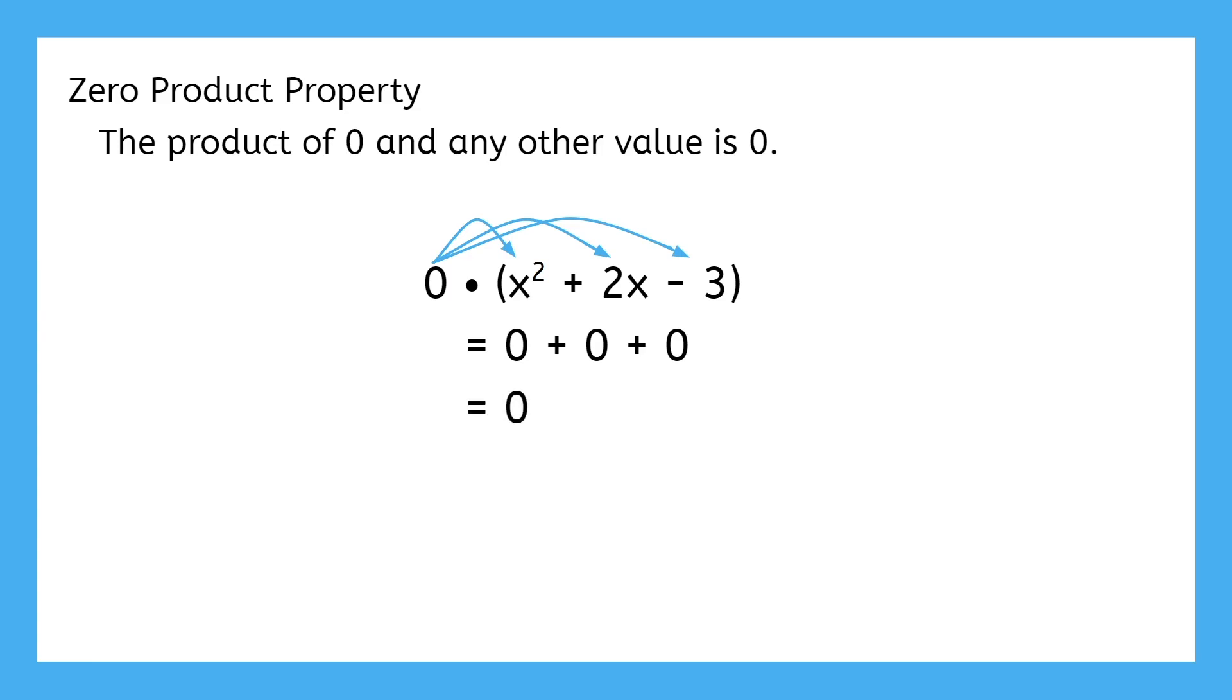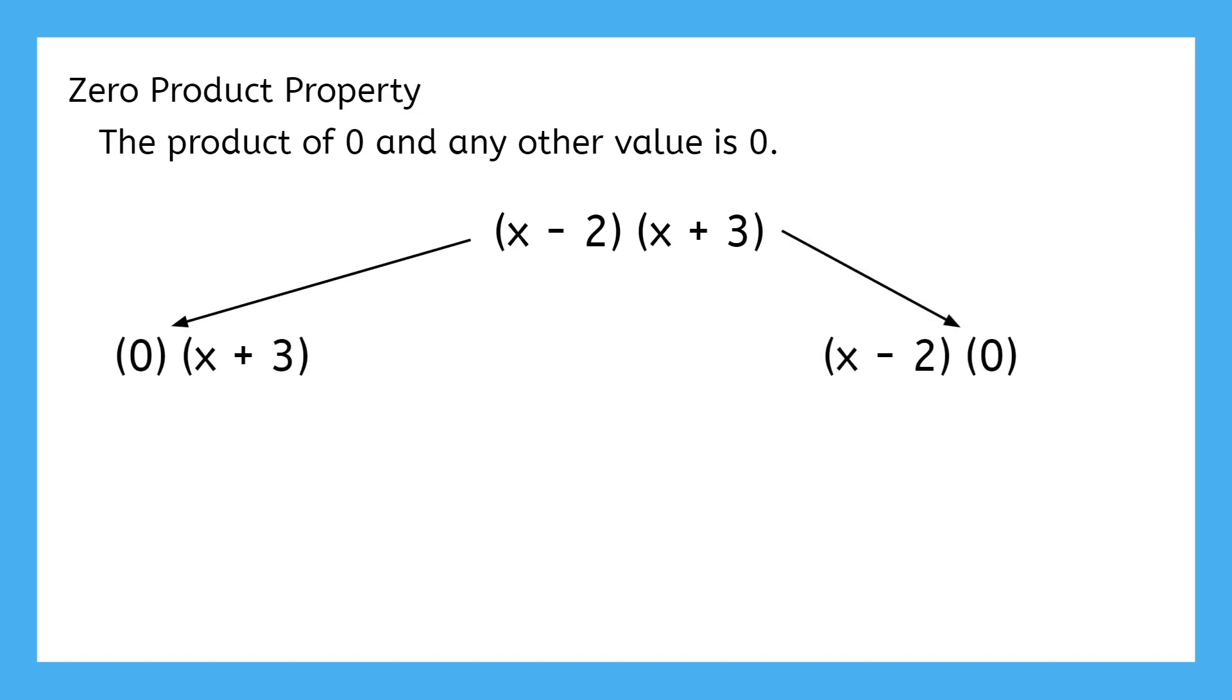But the most important implication of the zero product property, especially when it comes to quadratics, has to do with binomial factors. If we find a way to make either of the factors zero, then by the zero product property, the product will automatically be zero. But how do we make one of the factors zero? By using the variable. We could find a value for x that causes the factors to become zero.